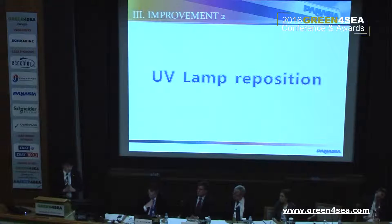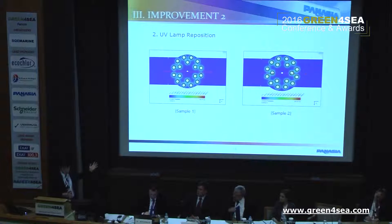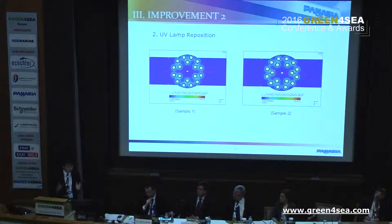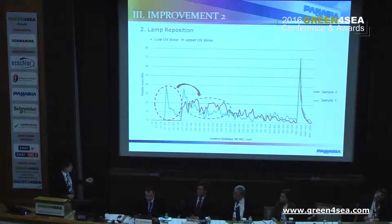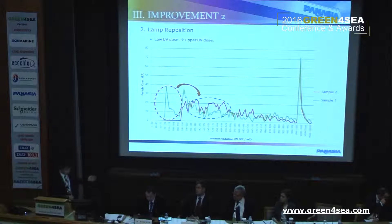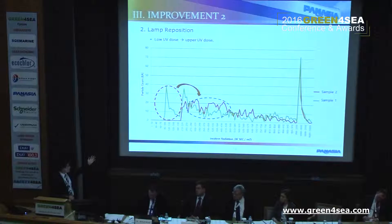The second case study is UV lamp repositioning. By repositioning the UV lamp, as you can see in sample one, there can be cases of microorganisms passing through the UV reactor without any exposure to UV dose. We want to stop that phenomenon, so we intentionally reposition the UV lamp, and this creates the same turbulence effect inside the UV reactor. The green line is sample one and the red line is sample two — the low-dose particle amount was moved into the higher dose part just by changing the lamp position.